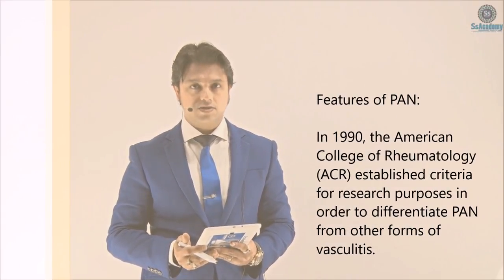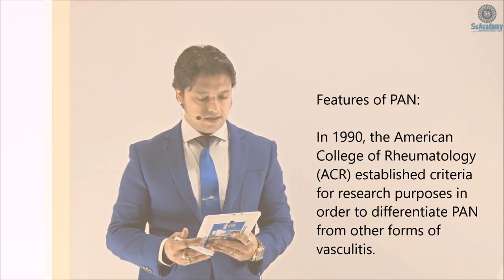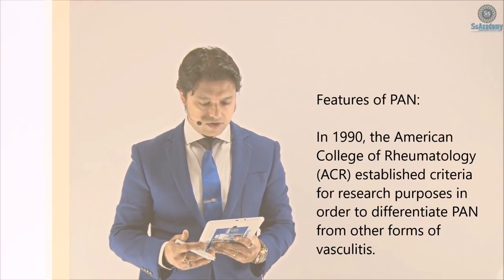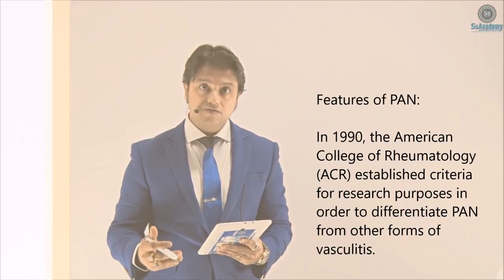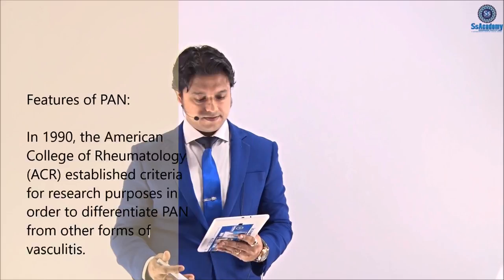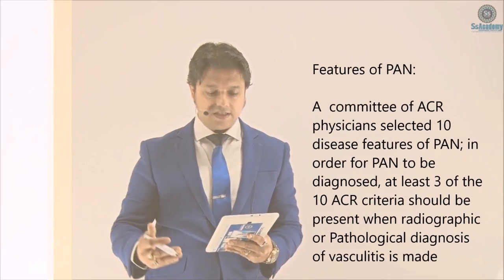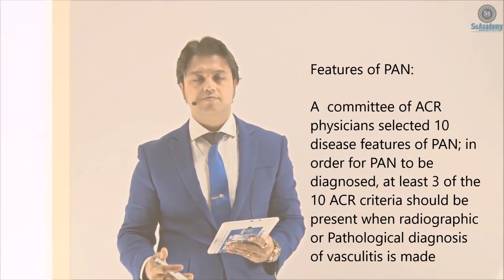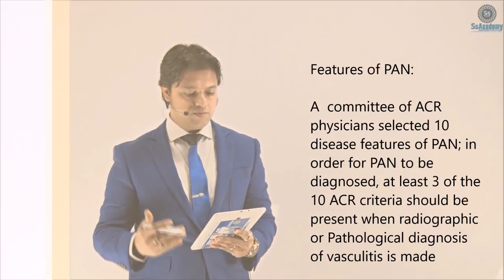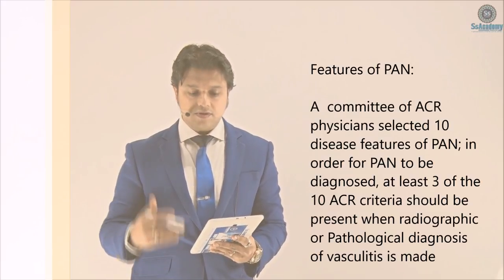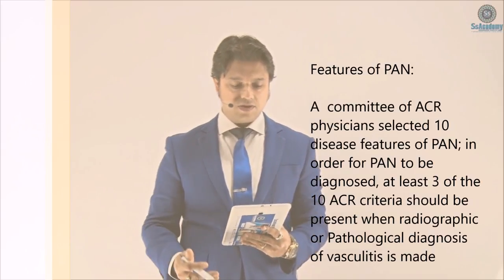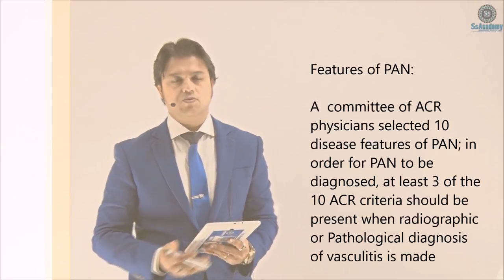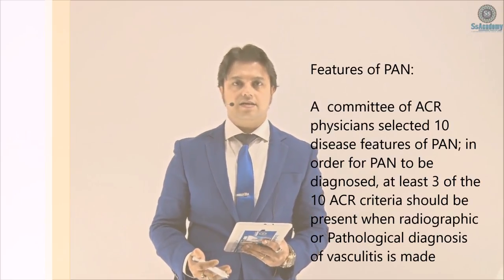Some features of PAN are very important to know. In 1990, the American College of Rheumatology (ACR) established criteria for research purposes to differentiate PAN from other forms of vasculitis. A committee of ACR physicians selected 10 disease features — the 10 diagnostic criteria. At least three of these 10 ACR criteria should be present to diagnose PAN, when radiographic or pathological diagnosis of vasculitis is made.